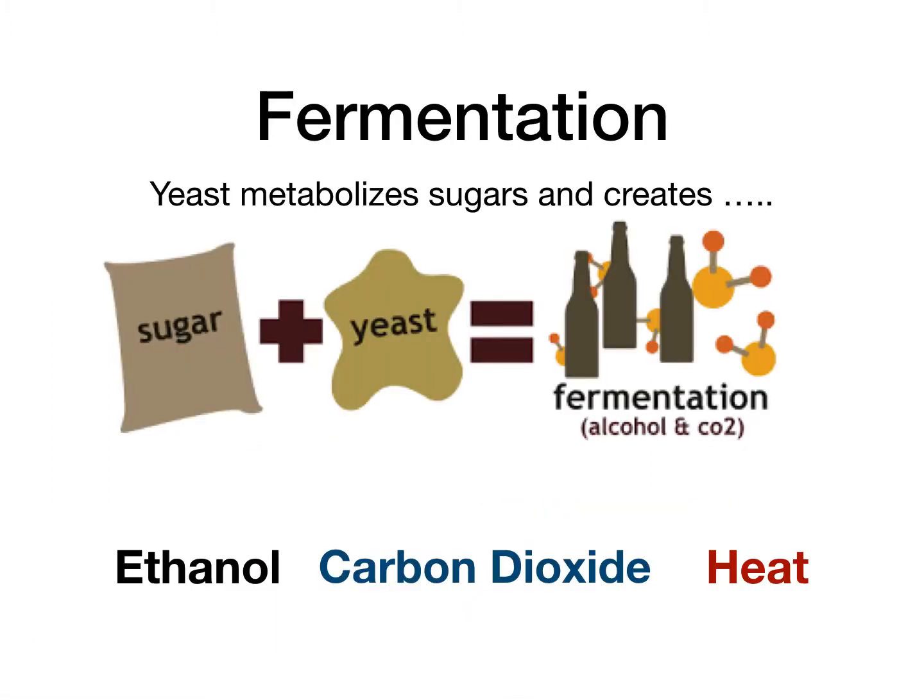Here is the fermentation formula in its simplest form. Fermentation is when yeast metabolizes sugar — the yeast eats the sugar — and as a byproduct it gives us three things: ethanol, which is the type of alcohol we get from fermentation; carbon dioxide, which we can release into the air or, in the case of sparkling wine, trap; and because it's a chemical reaction, there is some heat development. The basic fermentation formula is: Sugar + Yeast = Ethanol + CO2 + Heat. You should have that memorized — it's important.